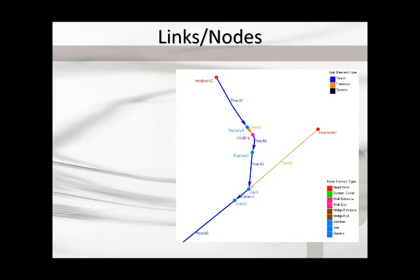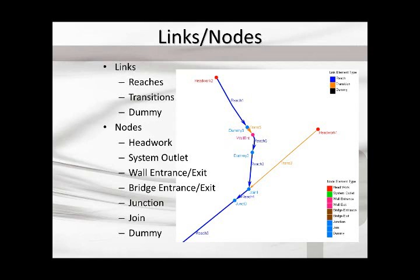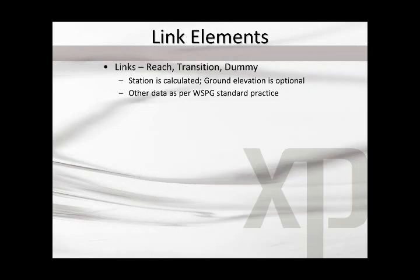We had to create a dummy node and a dummy reach for a few instances to maintain the XY coordinate system and graphical interface. The links would be the reaches or transition elements, and we created a dummy link. The nodes would be the system headworks, system outlet, wall entrance/exit, bridge entrance or exit, a junction, the newly created join element, and a dummy node in the case of connecting two reaches.